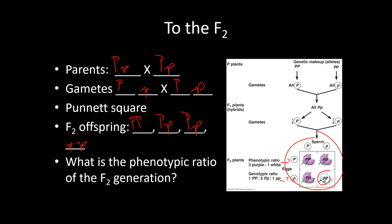The question asks for the phenotypic ratio of the F2 generation. Phenotype means what does something look like. The big P big P is purple, both big P little P's are purple — that gives us three purple. The little P little P is white. So we get a three to one ratio. When answering a ratio question, you can't just say 'three to one' — you must say three purple-flowered plants for every one white-flowered plant.